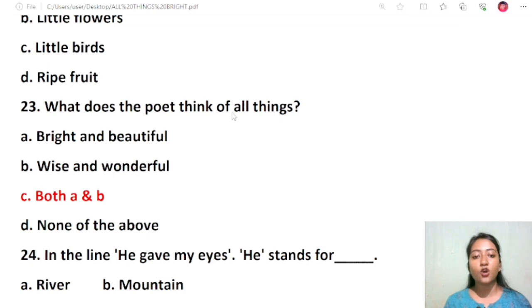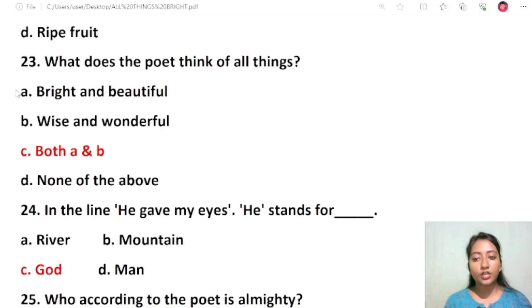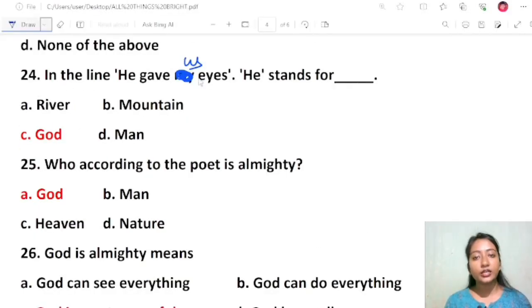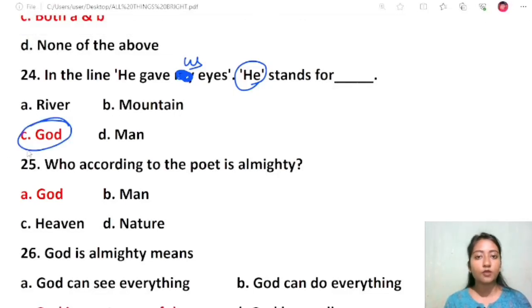Question 22: What does the poet think of all things? Bright and beautiful, wise and wonderful, both A and B, none of the above. The correct answer is C, because both A and B are correct answers. The poet thinks all things are bright, beautiful, wise, and wonderful. Question 23: In the line, he gave us eyes, he stands for God. God gave us eyes.